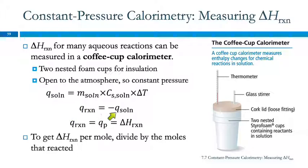Q for the reaction is equal to Q for the solution, but opposite in sign. Q for the reaction is Q at constant pressure, which is delta H. Delta H for reaction is typically expressed in kilojoules per mole. And so to get per mole, we're going to figure out, take the mass of our reactants and convert it to moles and then divide. And so this is exactly the thing that we're going to be doing in lab today.